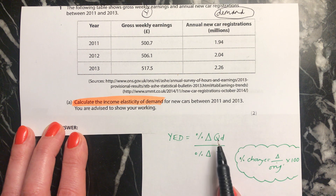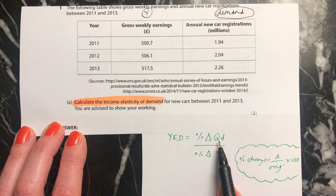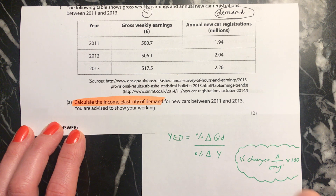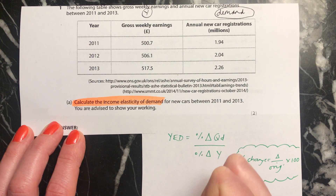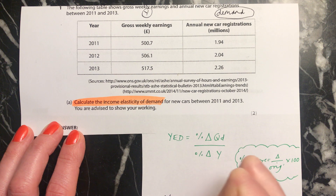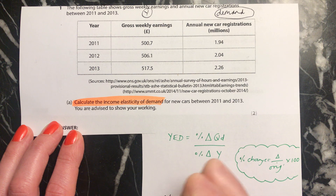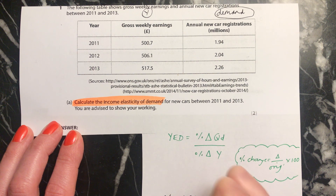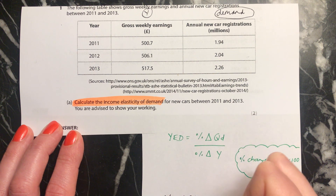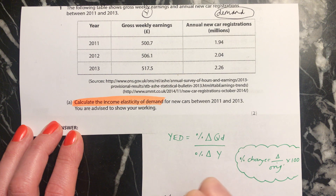The top line is to do with the quantity demanded. You need to do 2.26 — the new number — minus the old number, 1.94, divided by the original number, 1.94, times 100. That's your top line.